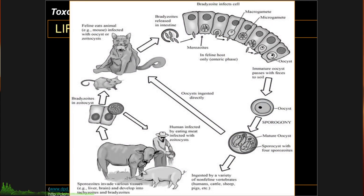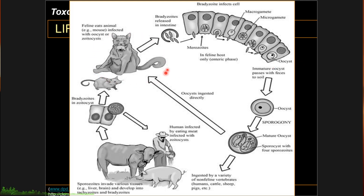This is the general life cycle of Toxoplasma, as drawn from one of our local books here in the Philippines. Please take note of the important animals involved in the life cycle of Toxoplasma: you have cats, which are very important; you have mammals, including humans; and you have small mammals or birds.